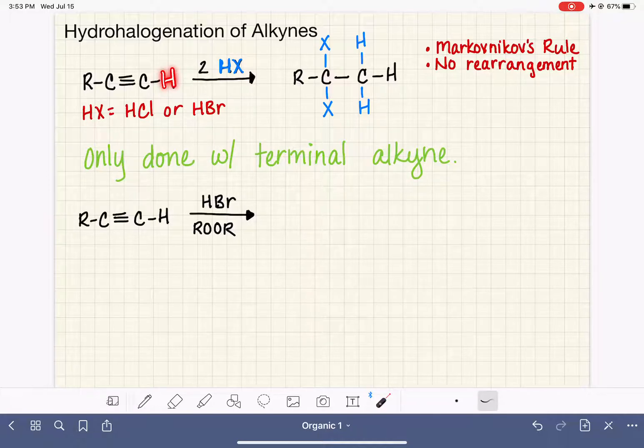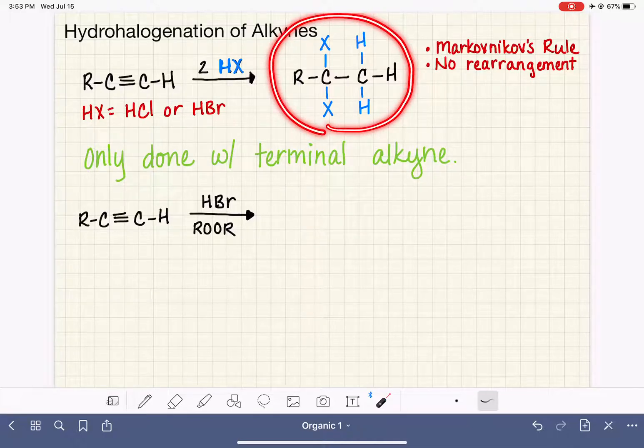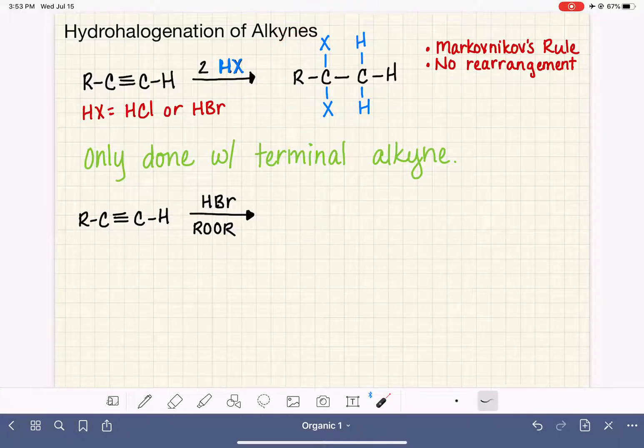So with a terminal alkyne, we have one hydrogen that's already on the alkyne, and that one hydrogen helps guide the location of the first incoming hydrogen and then the second incoming hydrogen as well. So doing this reaction with a terminal alkyne guarantees that we're only going to make one type of product in this reaction.